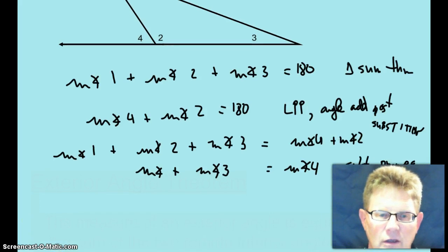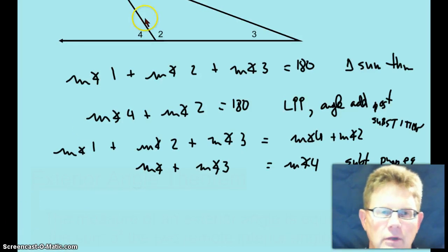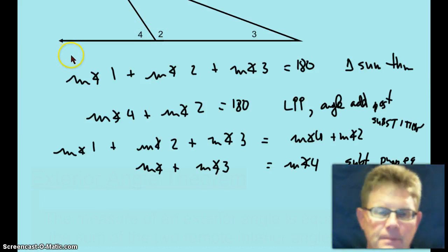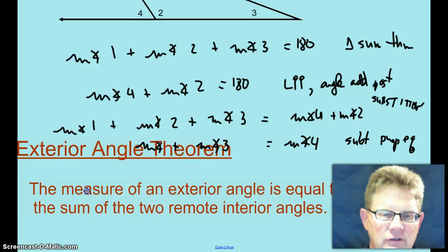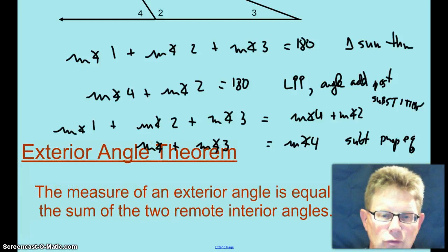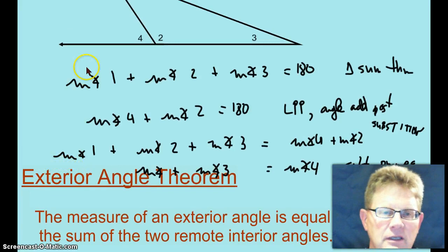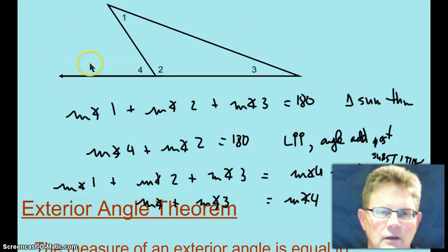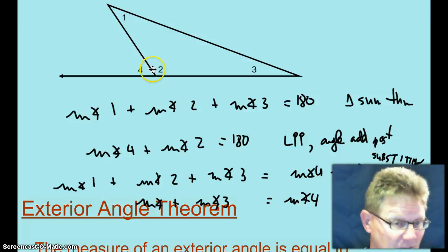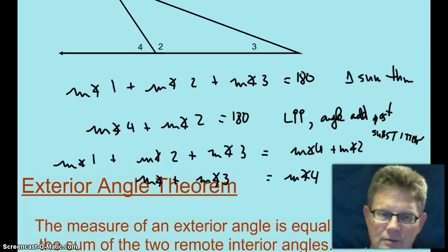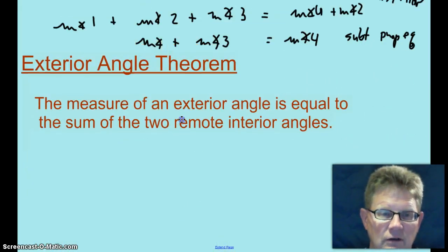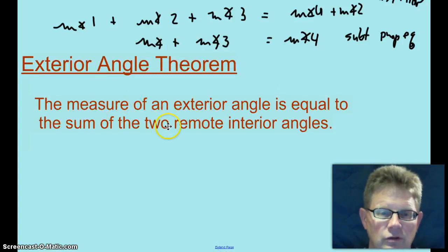It's a new theorem called the exterior angle theorem. Angle 4 is an exterior angle because it's outside the triangle when one of the sides is extended. The exterior angle theorem says the measure of an exterior angle is equal to the sum of the two remote interiors. Angle 2 is adjacent to angle 4, so it's not remote. Angles 1 and 3 are not adjacent — that makes them remote. So angle 4 equals angle 1 plus angle 3.